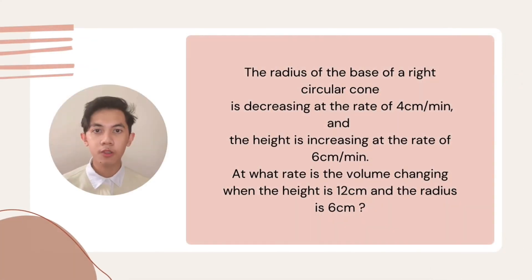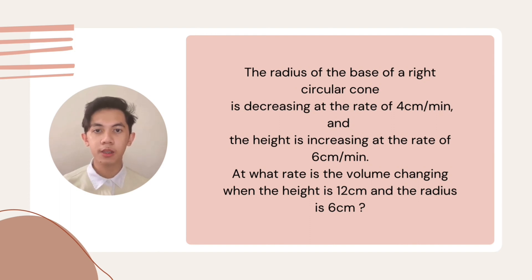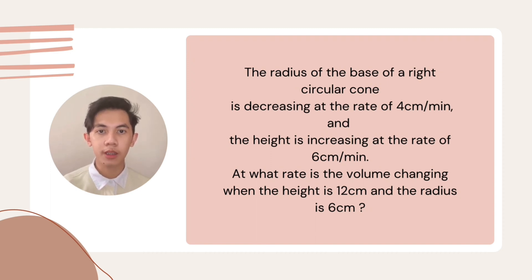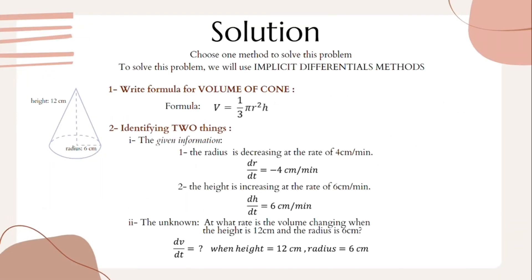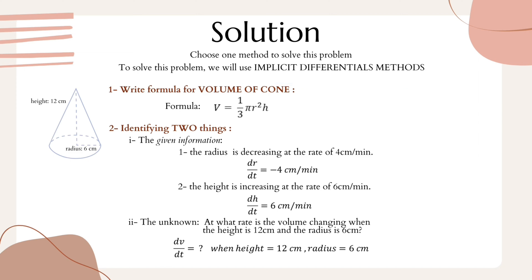The radius of the base of a right circular cone is decreasing at the rate of 4 centimeters per minute, and the height is increasing at the rate of 6 centimeters per minute. At what rate is the volume changing when the height is 12 centimeters and the radius is 6 centimeters? For this solution we will use the implicit differentiation method.